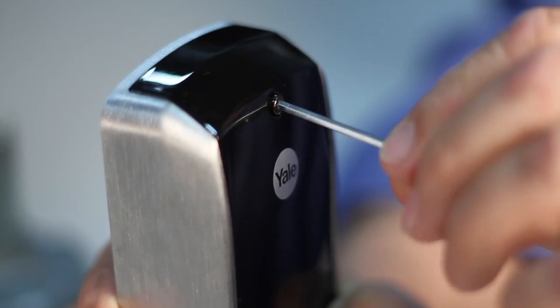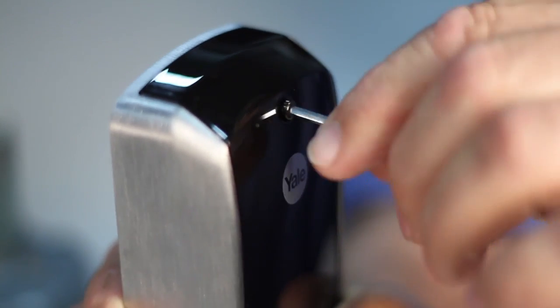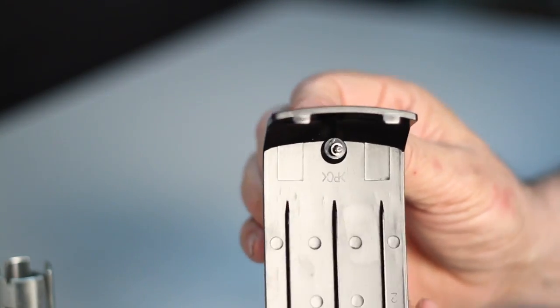Now remove the battery cover using the Allen key provided. Slide the battery cover off. Note that the hex screw does not come out completely.